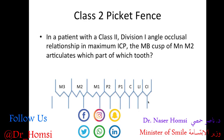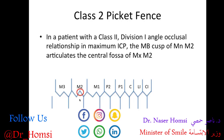Here's the Class II picket fence. Just move everything back a line and start on the central incisor drawing lines down. In a patient with a Class II Division 1 Angle occlusal relationship in maximum intercuspation, the mesial buccal cusp of the mandibular second molar articulates with which part of which tooth? Finding the second molar and the mesial buccal cusp, it's going to be articulating with the central fossa of the maxillary second molar. These questions aren't too bad — the picket fence really comes in handy for the harder ones to visualize.